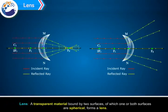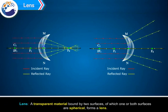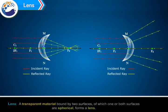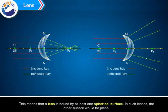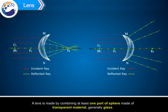A transparent material bound by two surfaces, of which one or both surfaces are spherical, forms a lens. This means that a lens is bound by at least one spherical surface. In such lenses, the other surface would be plain. A lens is made by combining at least one part of a sphere made of transparent material, generally glass.